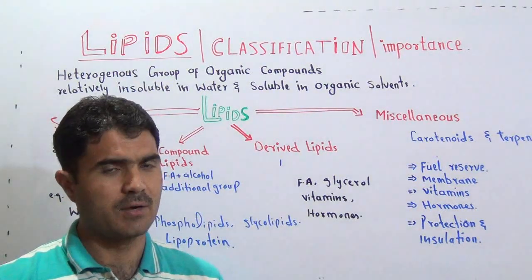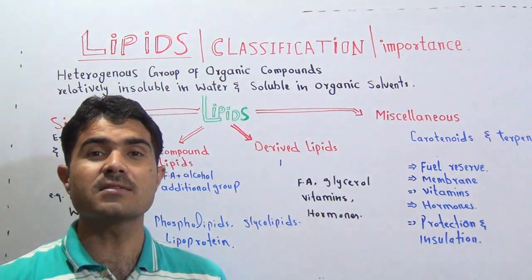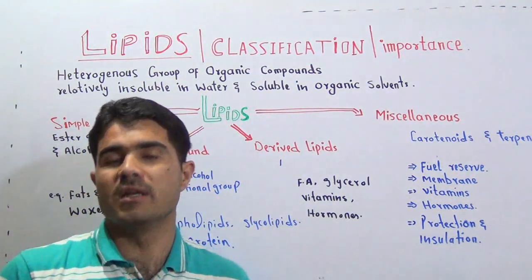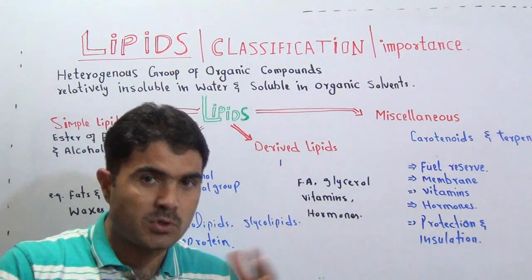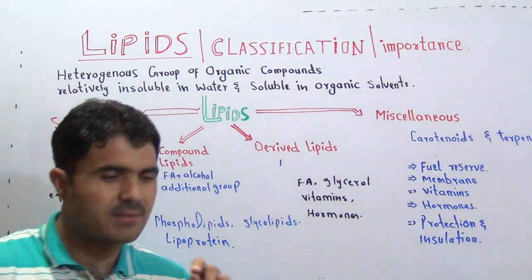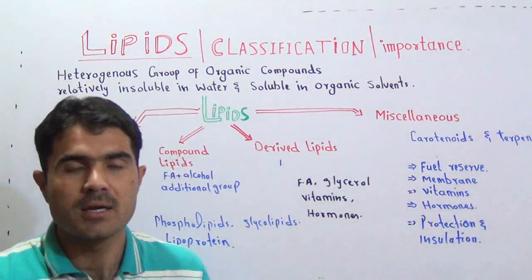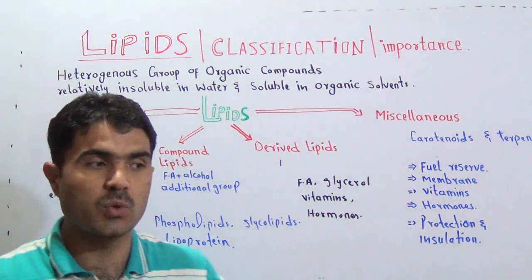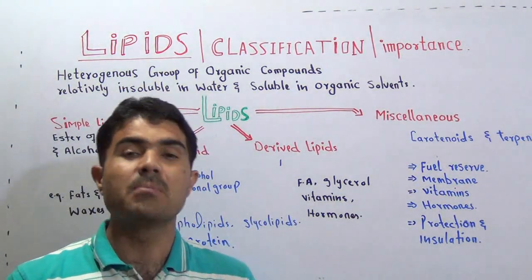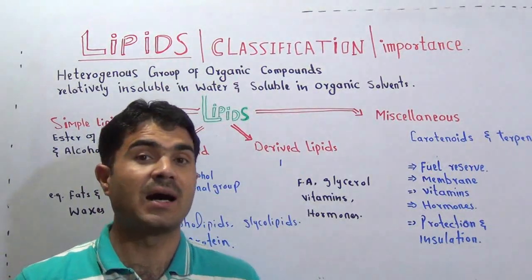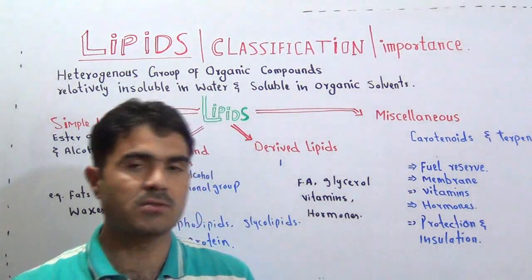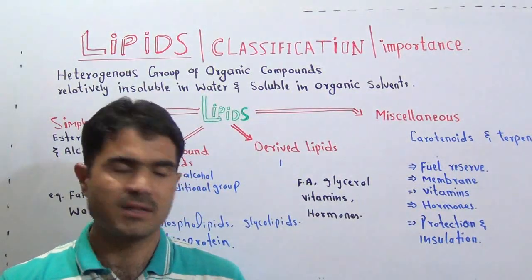A simple definition we have: lipids are organic compounds which are relatively insoluble in water — not absolutely insoluble. Relatively means they may show slight solubility in aqueous media, but overall they are insoluble. So we use the word relatively. They are relatively insoluble in water but soluble in organic solvents. Organic solvents include alcohol, ether, and ketones. They are soluble in organic solvents — this is the definition of lipids.